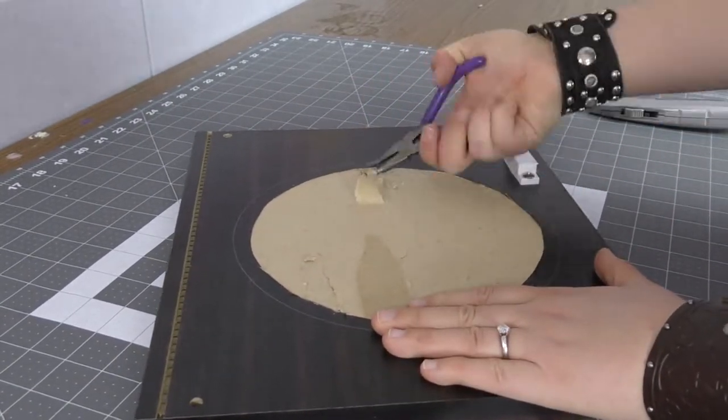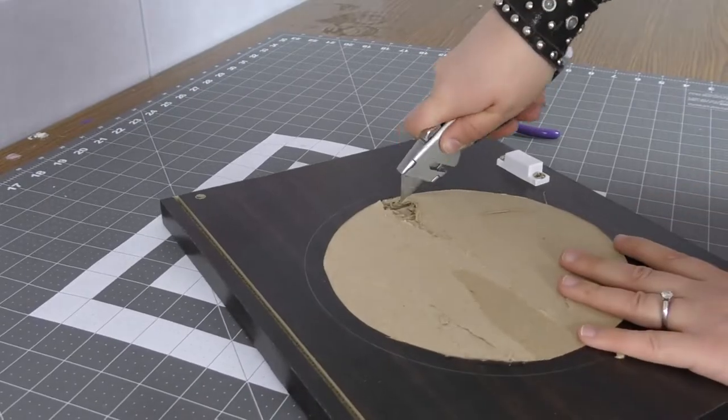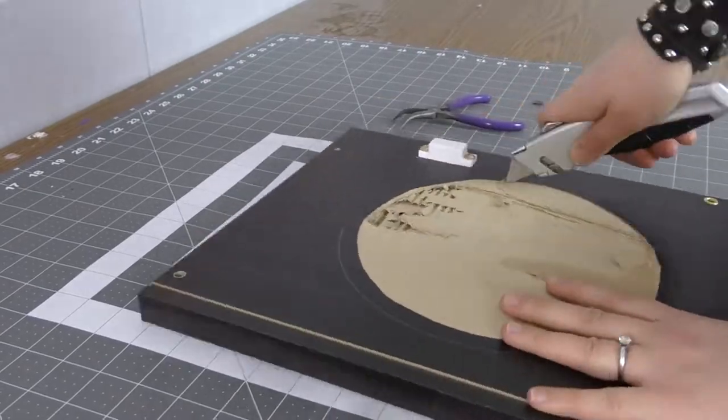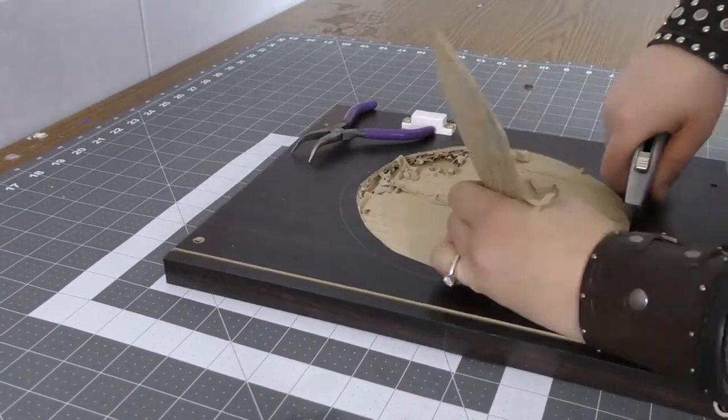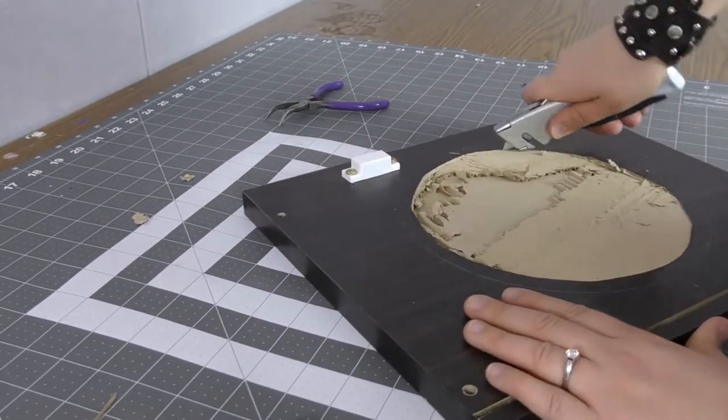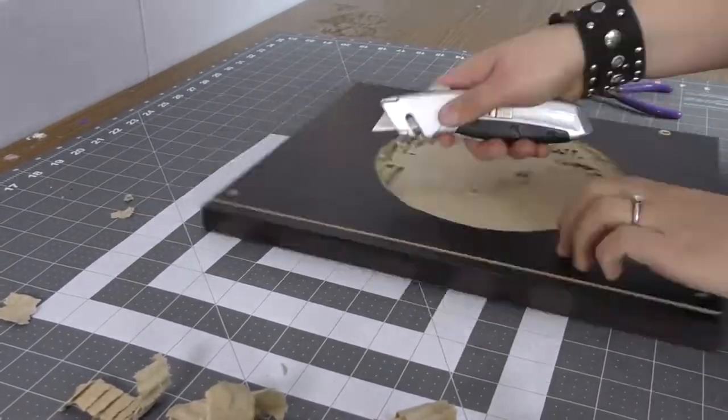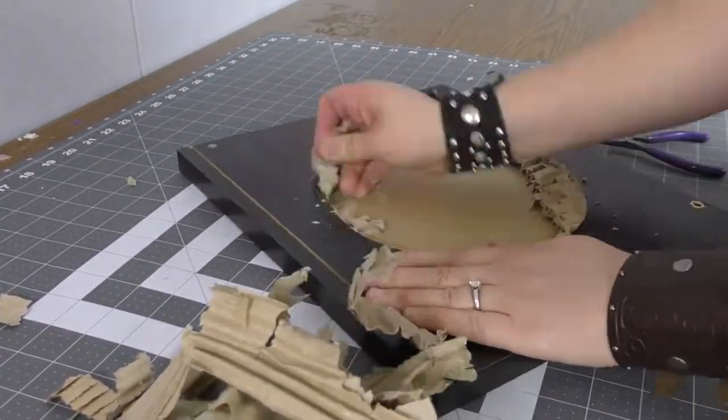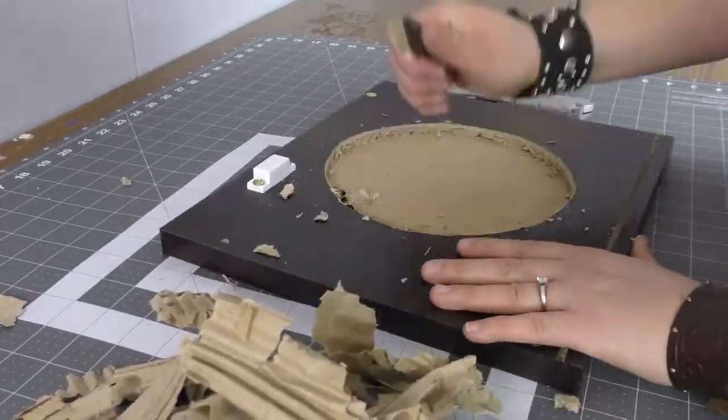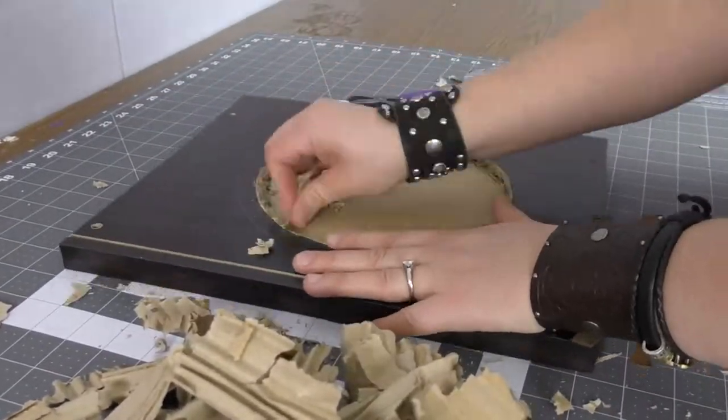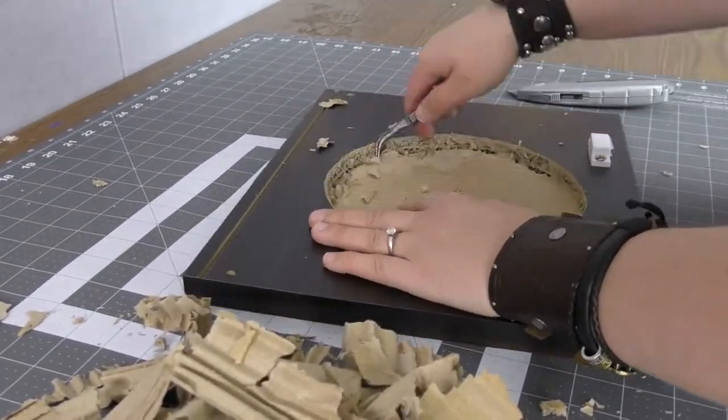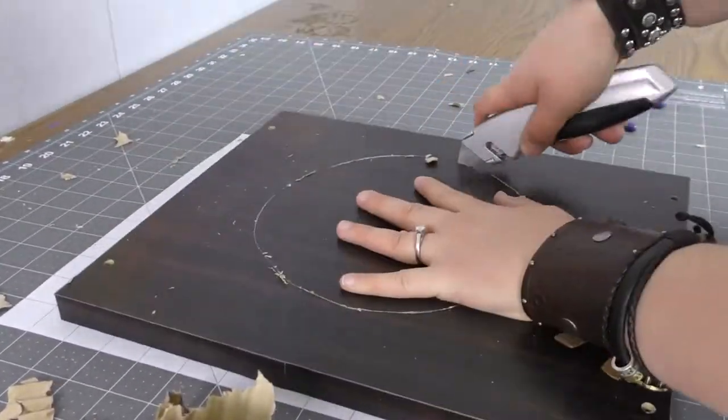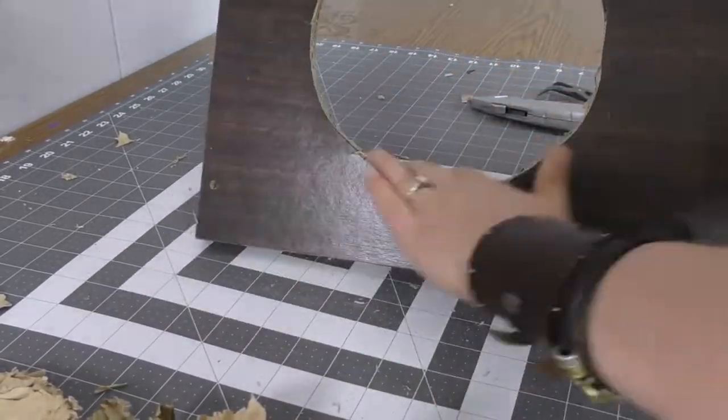I got out a pair of needle nose pliers to help just grab the pieces to rip them. You can see just how cool this material is. It's really just like ripping apart a cardboard box. There you have it. You can clean up the edges a bit but now we have our hole, we can move on to the next part.